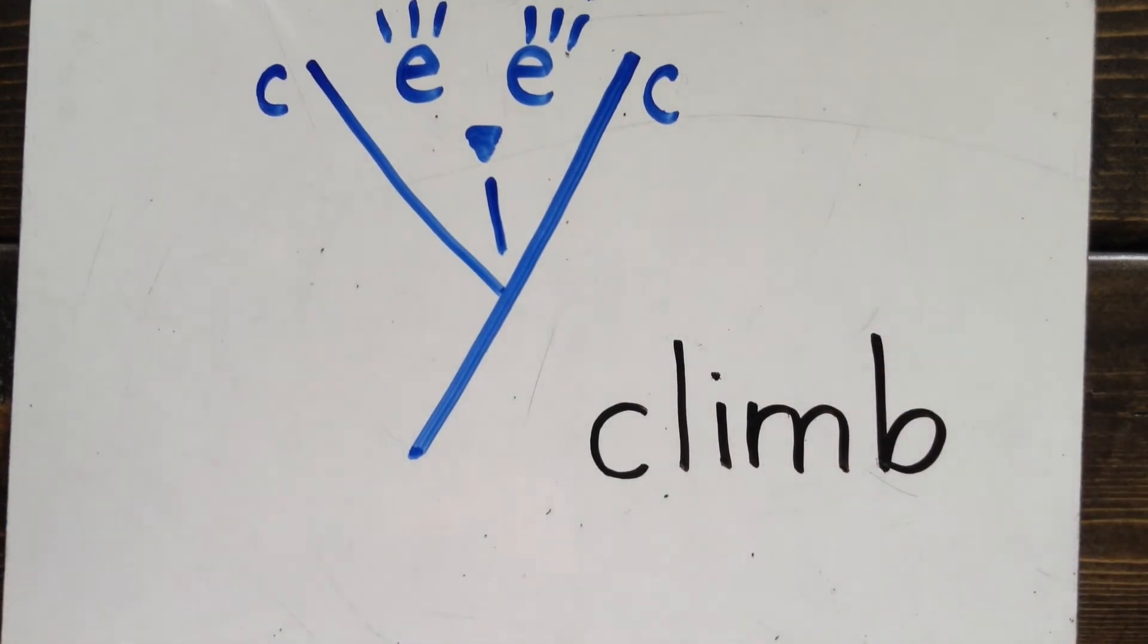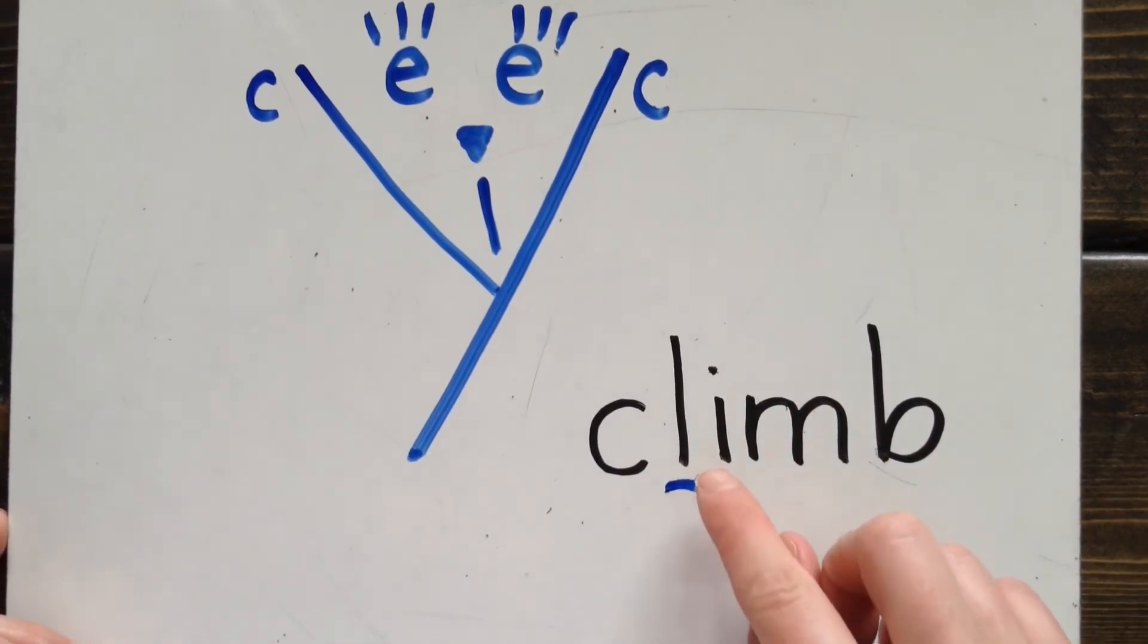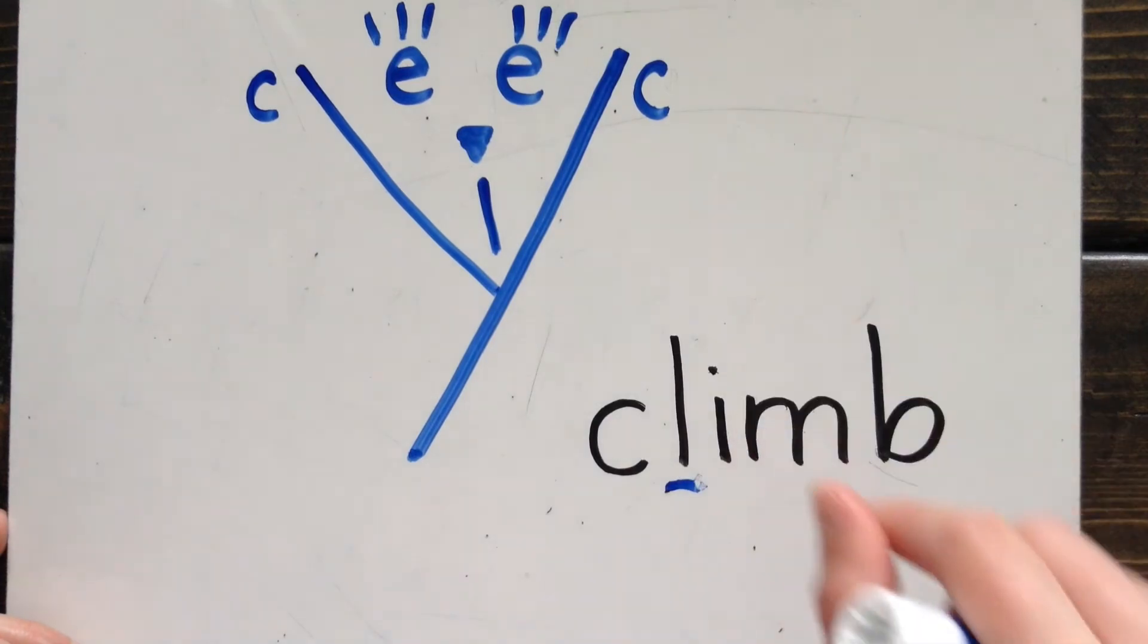This is the word climb. Climb the tree. I know it's climb and not slime because I look at the letter that comes after the C. This is the letter L. L is not in my Cici Cat picture, so I will not give the C cat ears. Instead, it will make its regular k sound. I can put the k and the l together to do a blend. Climb. Notice that the B is silent at the end of the word. Let's look at another example.